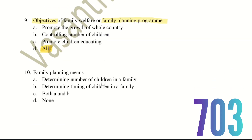Tenth question: family planning means? The choices are: determining number of children in a family; determining timing of children in a family; both A and B; or none. Both choices are correct — family planning involves determining the number of children and the timing between children. So the right answer is option C, both A and B.